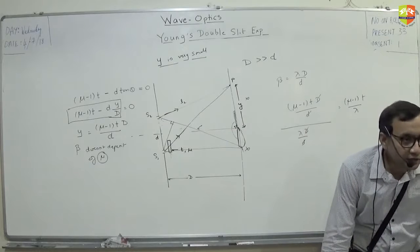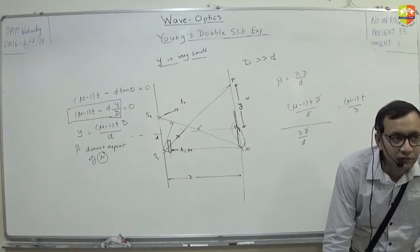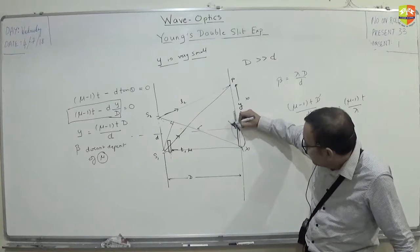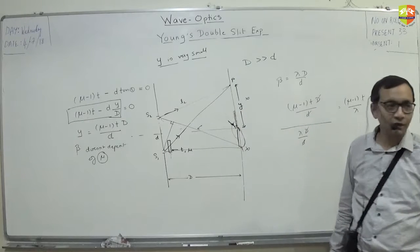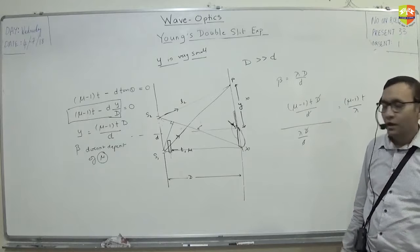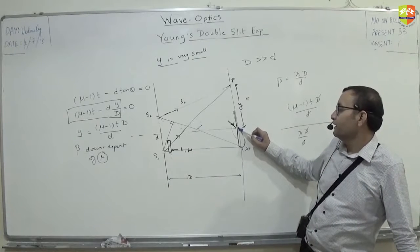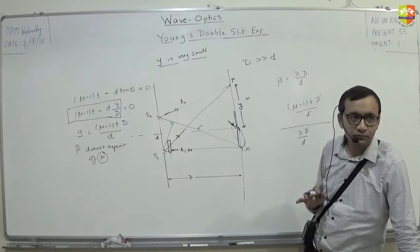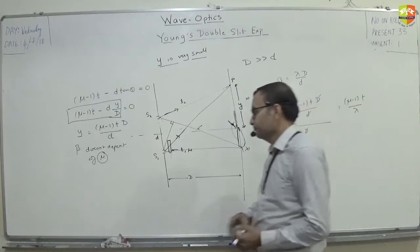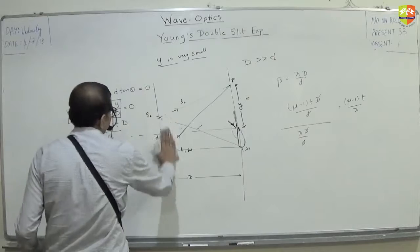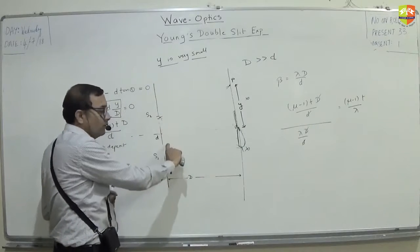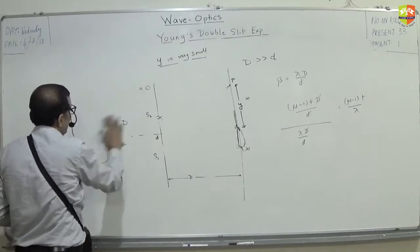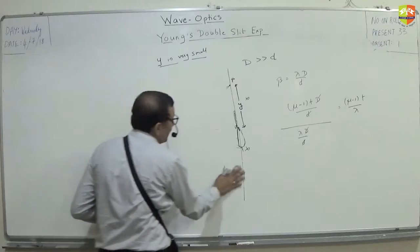Does the fringe count need to be an integer? It need not be. Because at any given point, there may not be a perfect destructive or constructive interference. Only if the center point happens to be exactly at a maximum or minimum will the count be an integer. Various scenarios can exist.